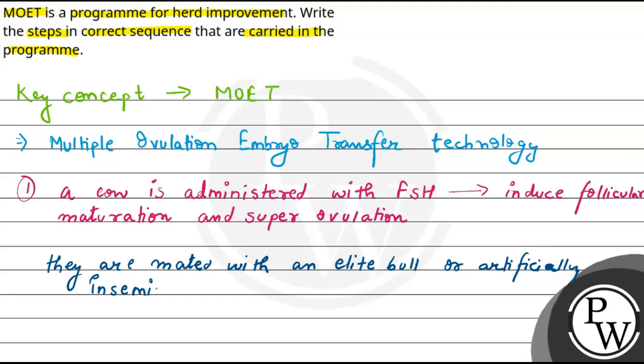We can write they get fertilized eggs, and these fertilized eggs, when at eight to thirty-two cell stages. At that period of time, they are recovered. They are non-surgically recovered.